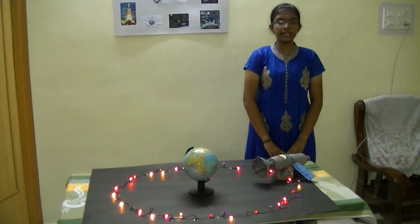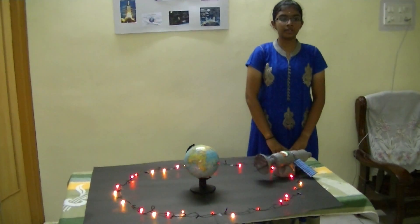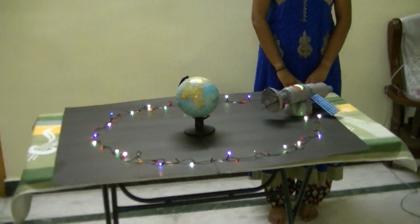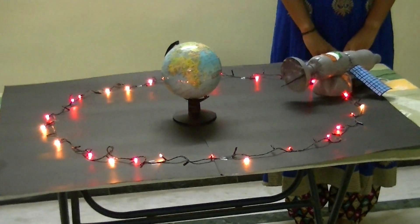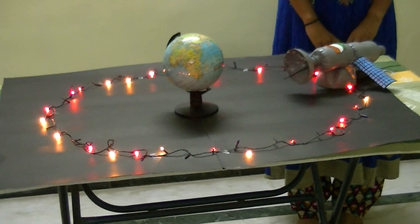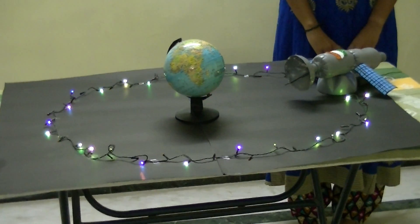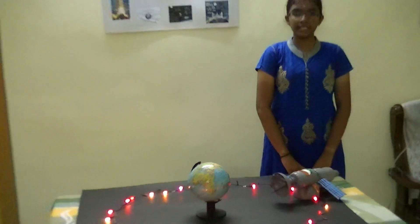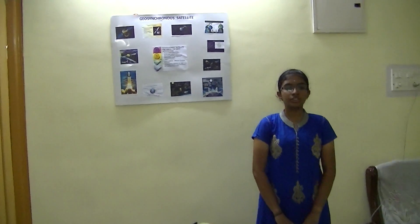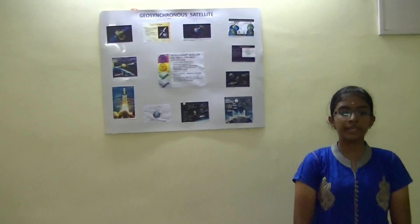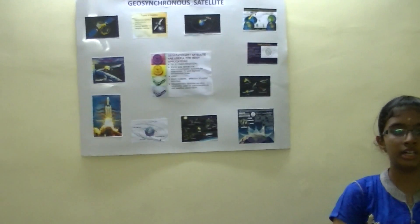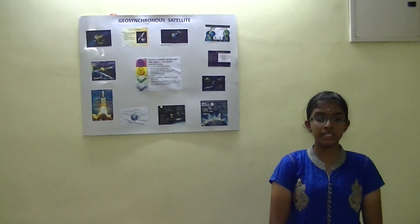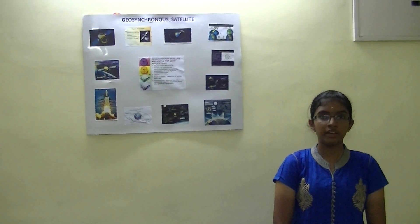The geostationary orbit follows the direction of the earth's rotation. A geosynchronous satellite is a satellite in geosynchronous orbit with an orbital period the same as the earth's rotation period, that is 23 hours, 56 minutes and 4 seconds.